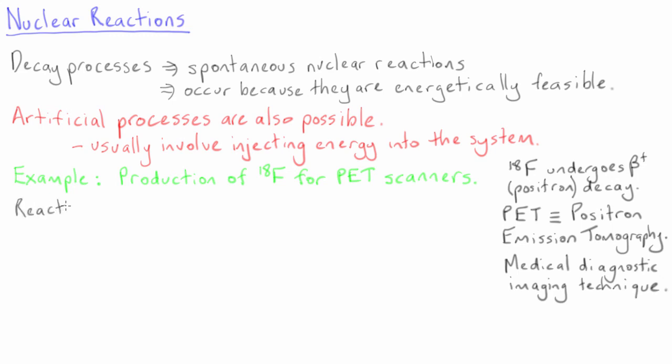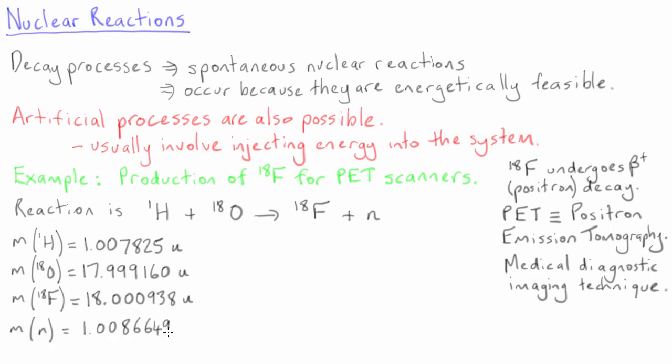The reaction that is most often used involves a proton, which you will remember is just a hydrogen nucleus. This nucleus fuses with an O-18 nucleus to create fluorine-18 and a neutron. We can look up the masses of all of these species and their values are given here in atomic mass units. The masses of the proton and the oxygen-18 add up to 19.006985 mass units, while the masses of the neutron and the fluorine-18 add up to 19.0096029 mass units.